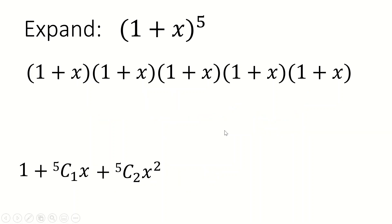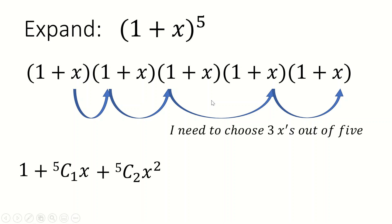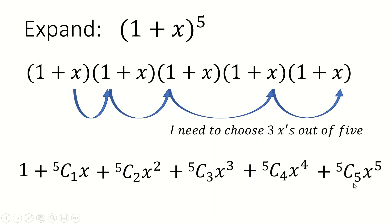What about the x cubed terms? I need to choose three x's out of the five, so the number of ways of getting an x cubed term is five choose three. That gives my x cubed terms. Then it's five choose four for four x's, and lastly five choose five. To choose five things when you have a pile of five things, there's only one way to do that — making sense because this gives the single x^5 term when I multiply all the x's together. So five choose five is just one.